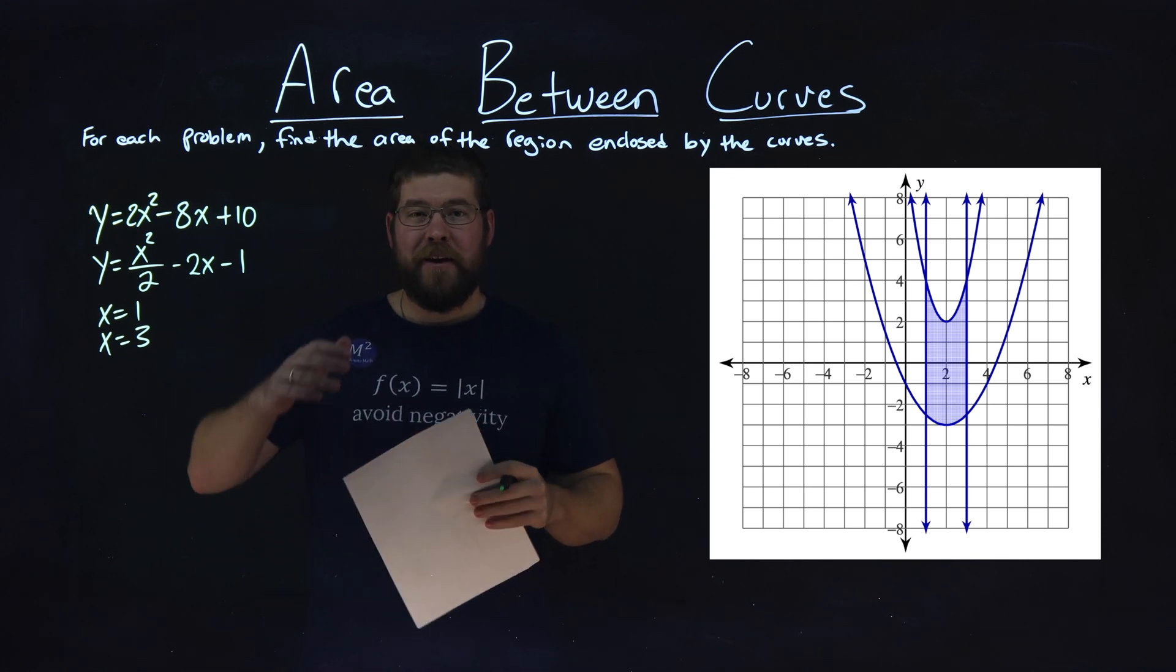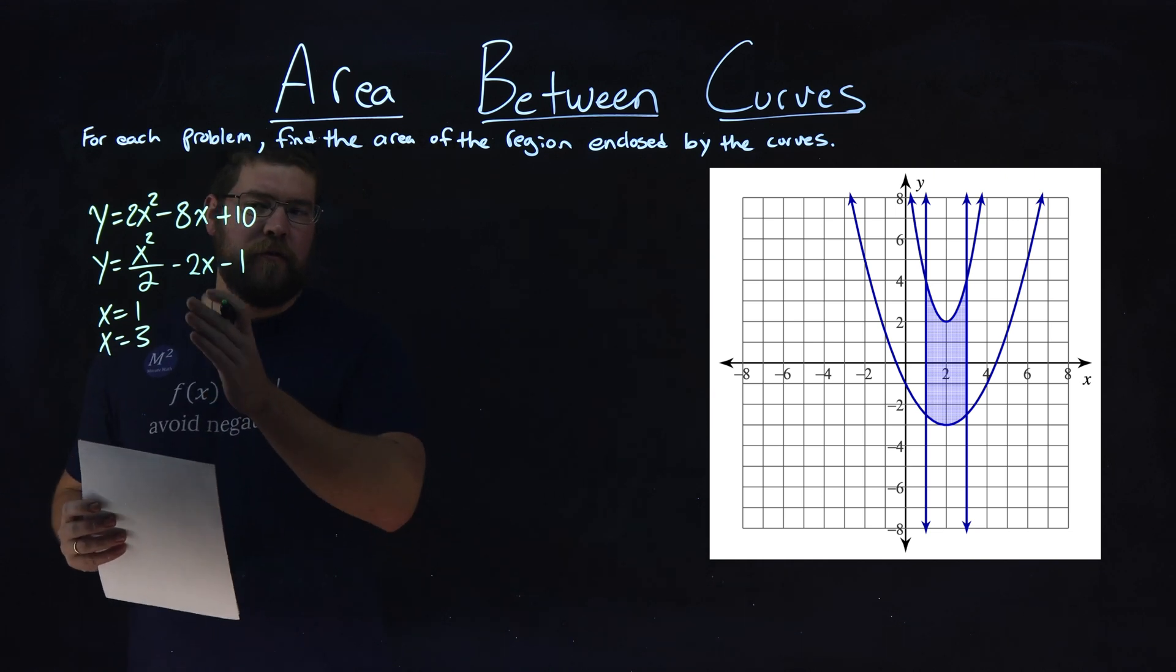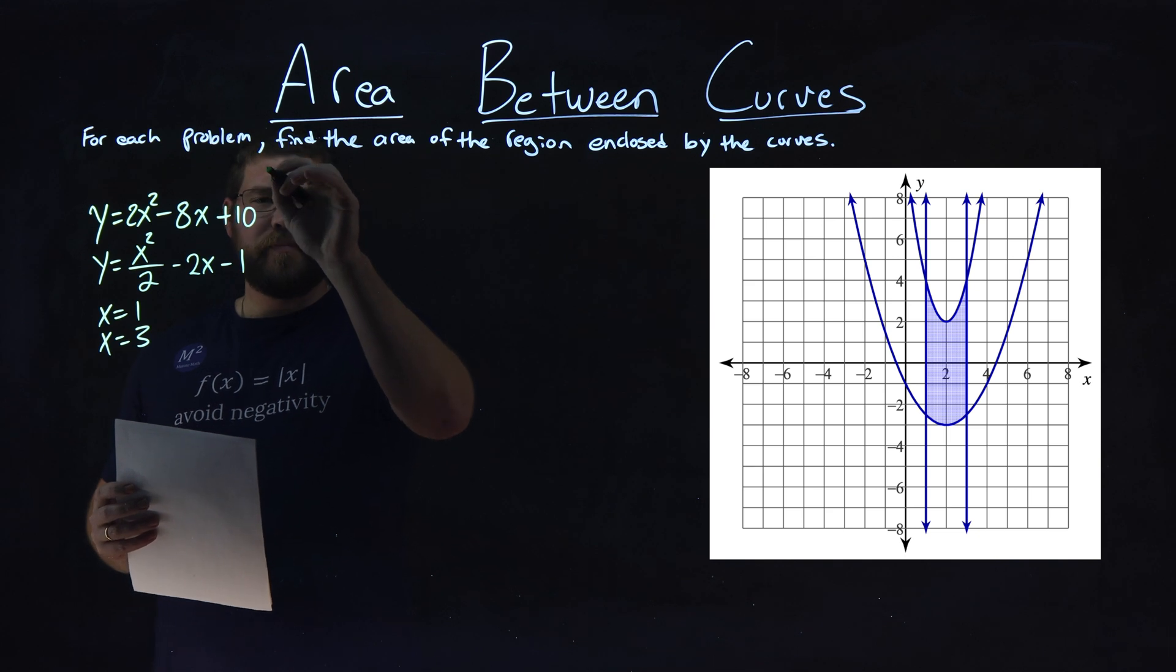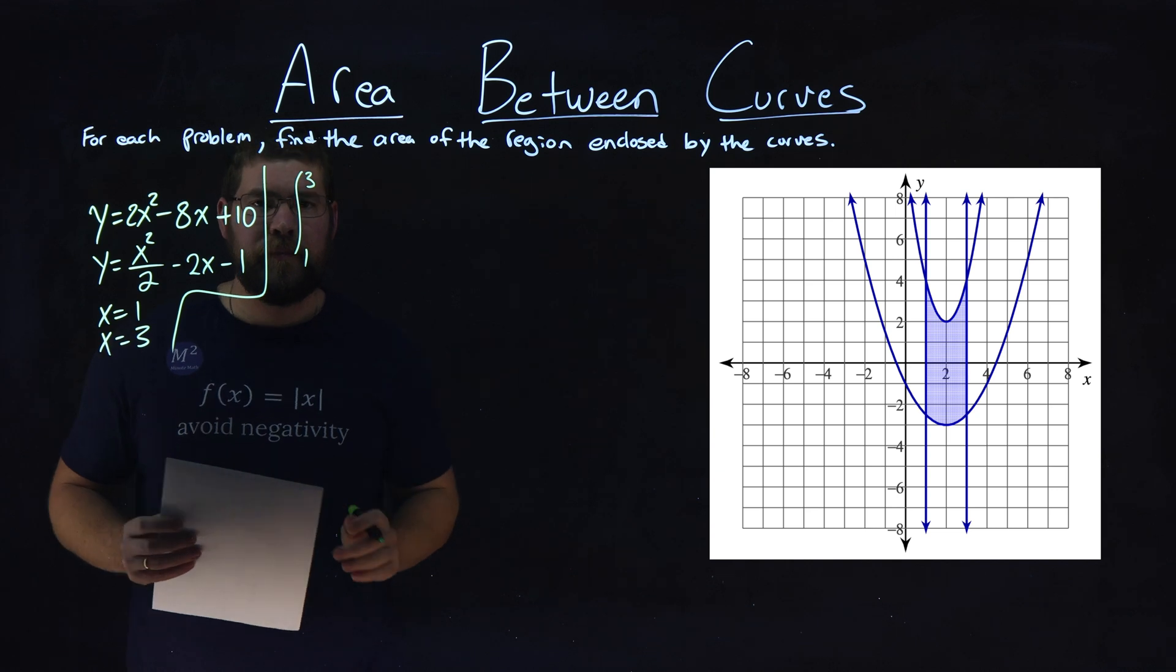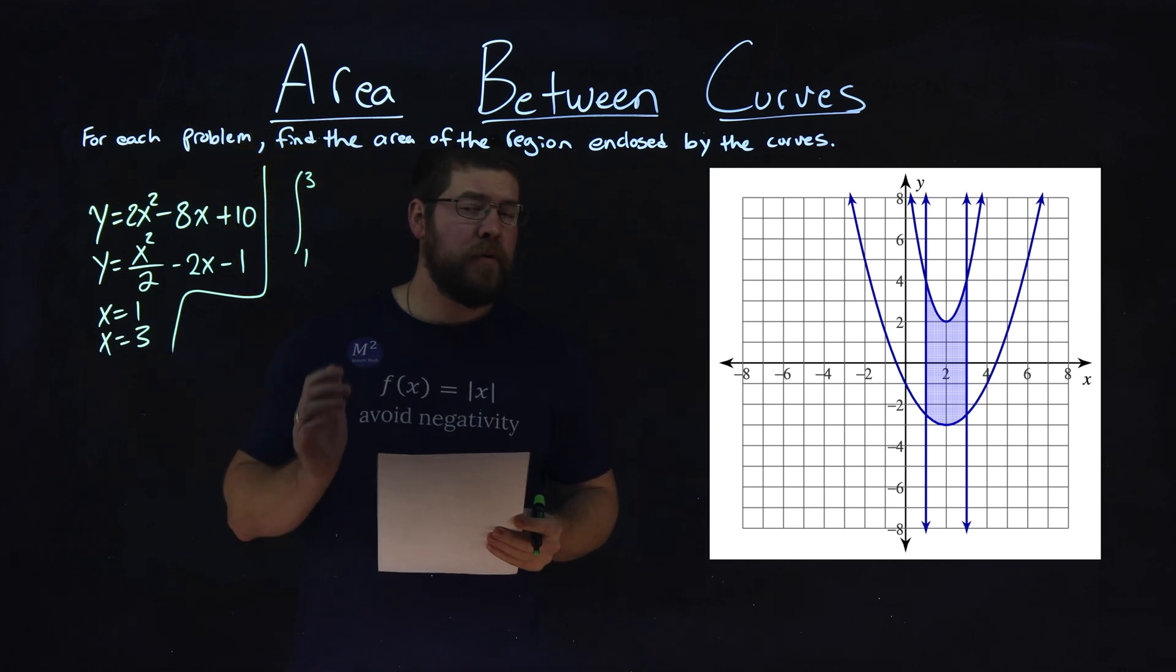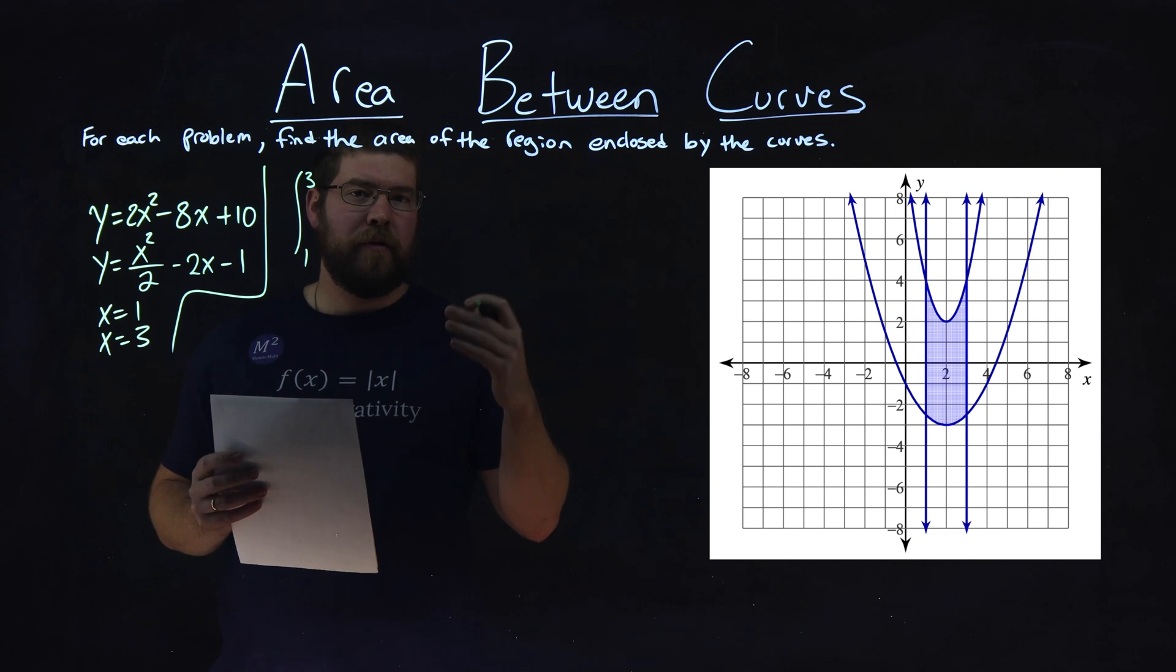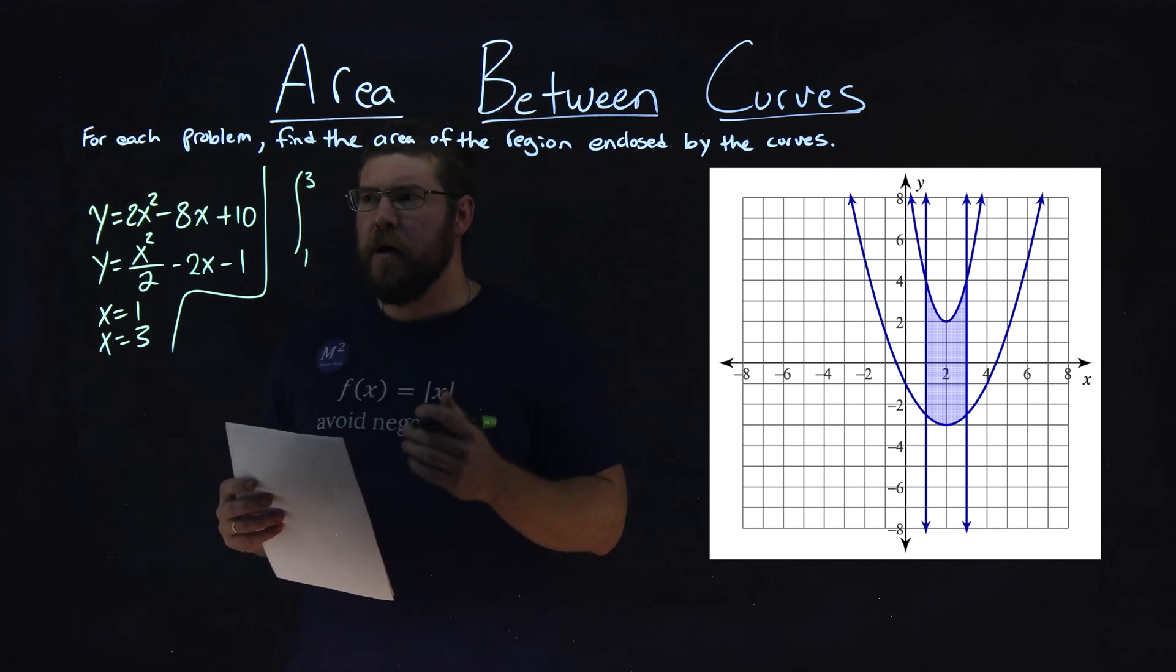So we need to set up a large integral here. They tell us from x equals 1 to x equals 3. So we have our integral here from 1 to 3. Now we want to find the area between curves. We want to find the upper equation and subtract it, the equation on top, basically, minus the equation on the bottom.